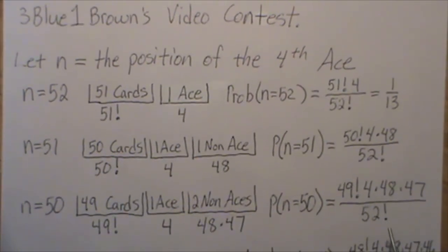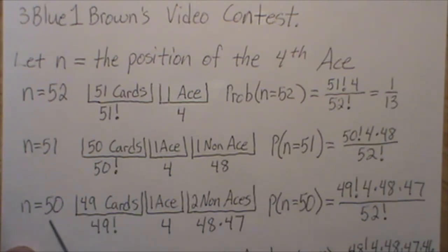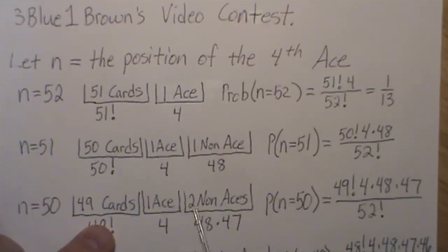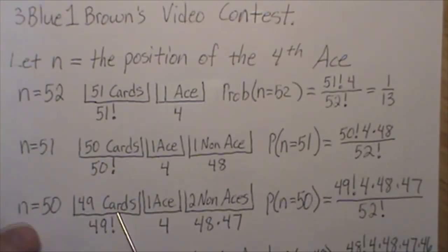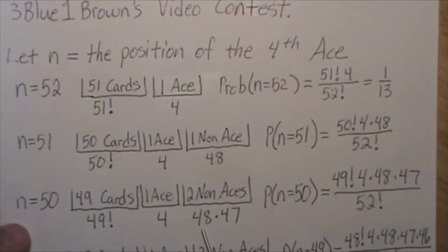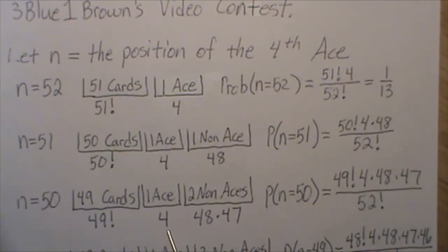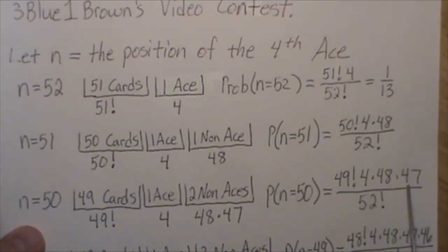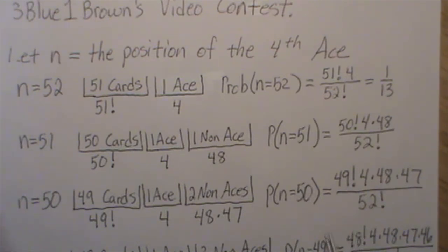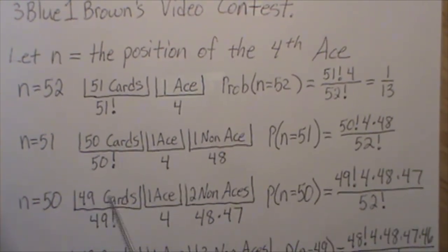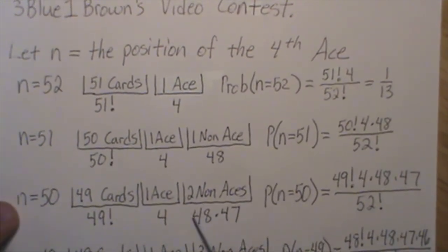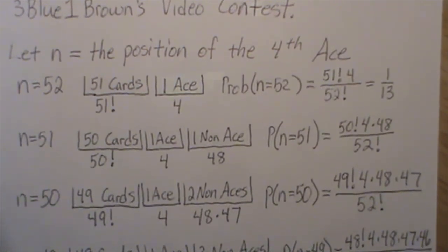Let's let N equal 50. There are three bins: two non-aces at the end, then one ace, and 49 cards in the first bin — making it third from last. The number of ways to pick two non-aces is 48 times 47, four ways to pick an ace, and 49 factorial ways to arrange the remaining cards. So the probability that N equals 50 is that product divided by 52 factorial. This is an application of the fundamental theorem of counting: if you create little bins and figure out the number of ways each bin can be filled, the product gives the total number of ways all of those can happen simultaneously.